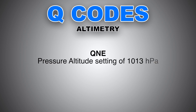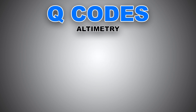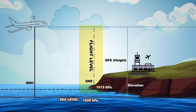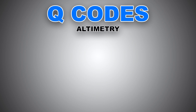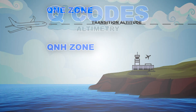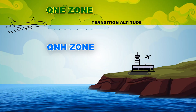Next one, QNE — also known as pressure altitude setting. QNE is the altitude above the 1013 hectopascals reference. When you set your altimeter to 1013 hPa, or 29.92 inches of mercury, your altimeter indicates pressure altitude. QNE, or standard pressure setting of 1013 hectopascals, is the altimeter setting to be used when flying at or above the transition altitude.